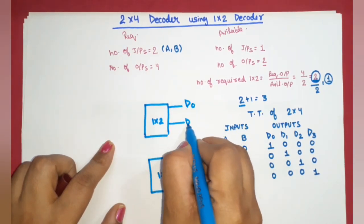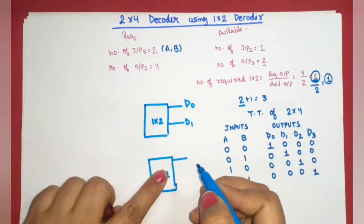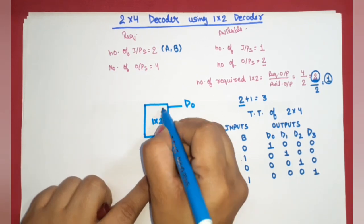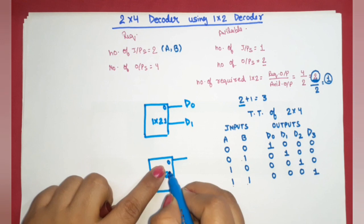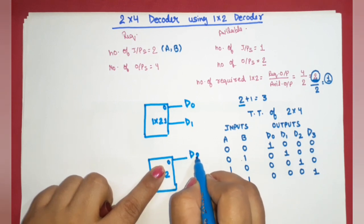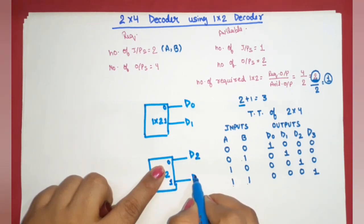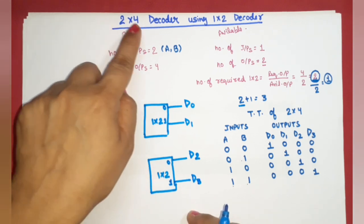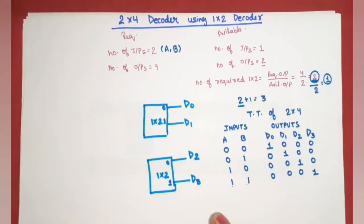D0 corresponds to output 0, D1 to output 1 of the first decoder, D2 to output 0 and D3 to output 1 of the second decoder. So two times two gives us four total outputs.